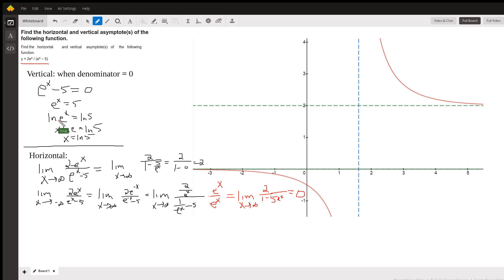And then taking the natural log of both sides to isolate that exponent. The natural log of e is just one, so x equals the log of five, ln of five. So that's what this line is right here—the vertical asymptote is the vertical line x equals the natural log of five.